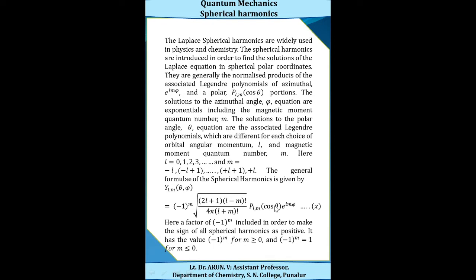They are generally the normalized products of the associated Legendre polynomials. This includes an azimuthal portion, i.e. e raised to imφ, and a polar portion, i.e. P_l^m(cosθ).